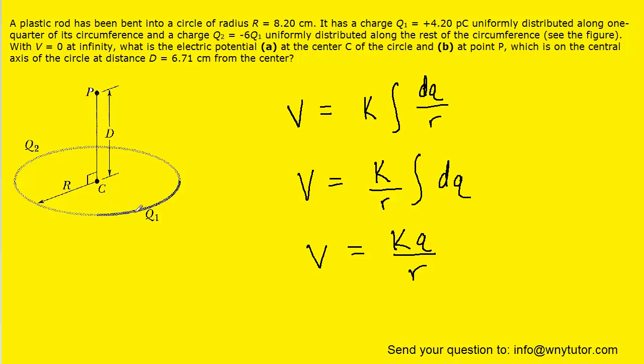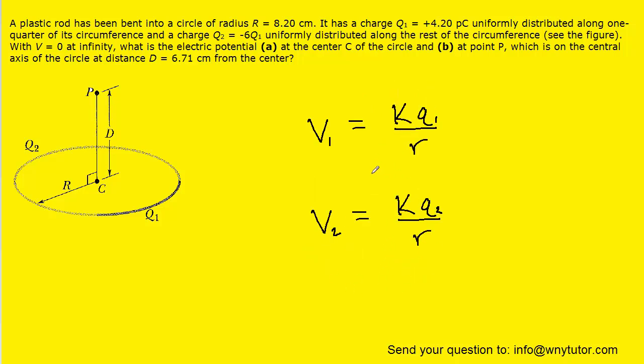Now, since there are two such charge distributions, again q1 and q2, we're actually going to have two of these expressions. And we can mark them v1 and v2 as long as we make the charges also q1 and q2 respectively. Now, the total potential present at this point c is simply the algebraic sum of v1 and v2.